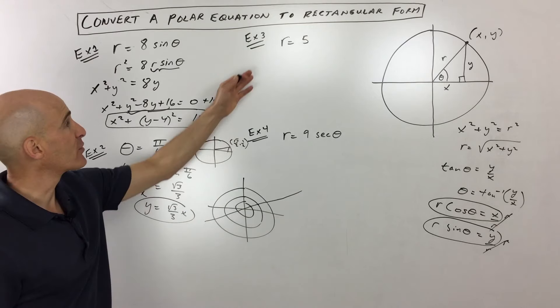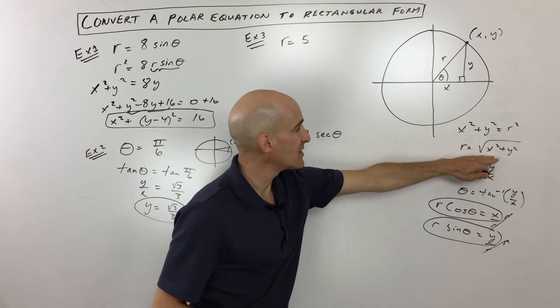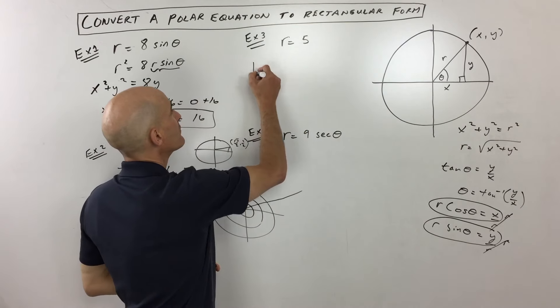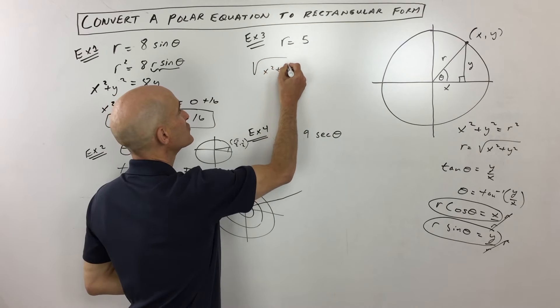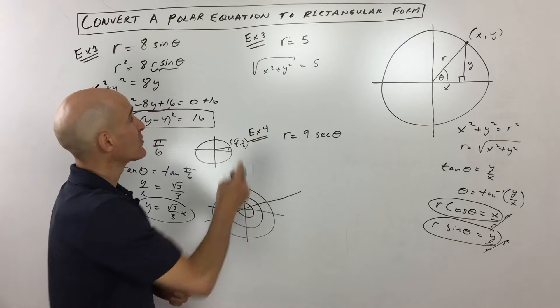So let's go to example three now. r equals five. Well, we know from previously here, we talked about r equals the square root of x squared plus y squared, so let's do that substitution. And then what you can do is you can square both sides to get rid of the square root.